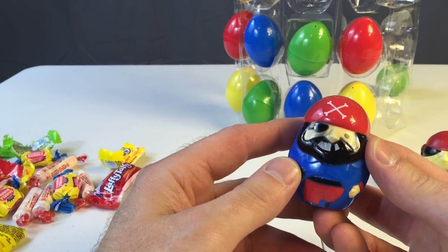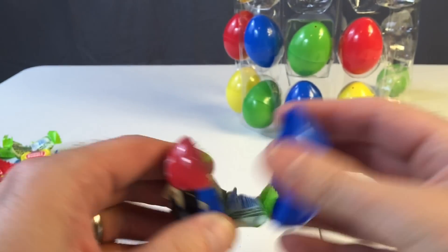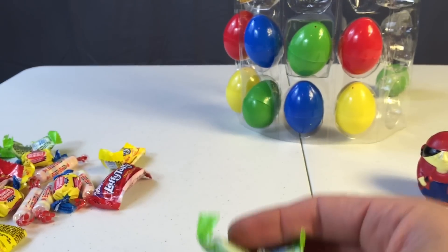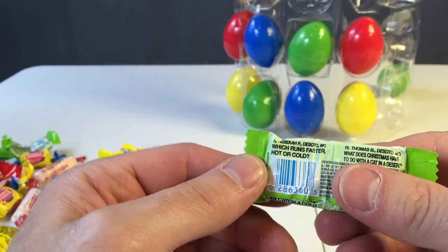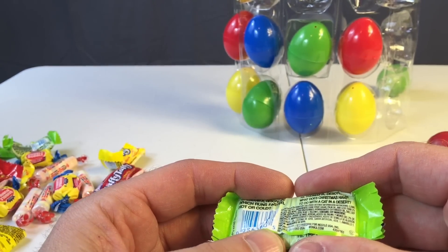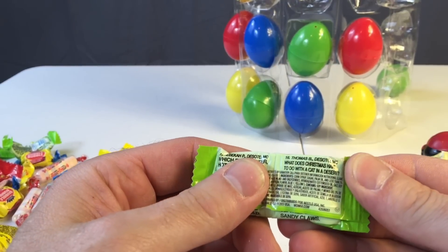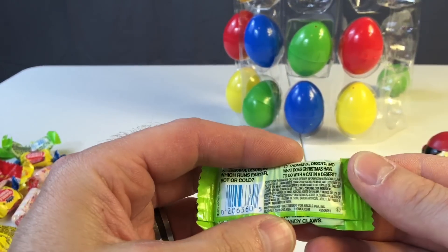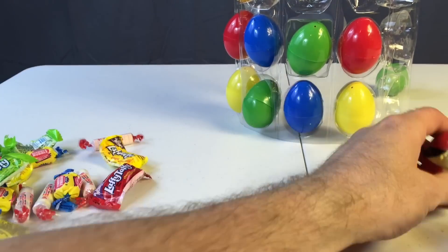How about this guy? More green. Which runs faster, hot or cold? Hot, because anyone can catch a cold. What does Christmas have to do with a cat in the desert? They both have sandy claws. I saw that when I cheated. These are bad jokes. Okay, our last pirate.